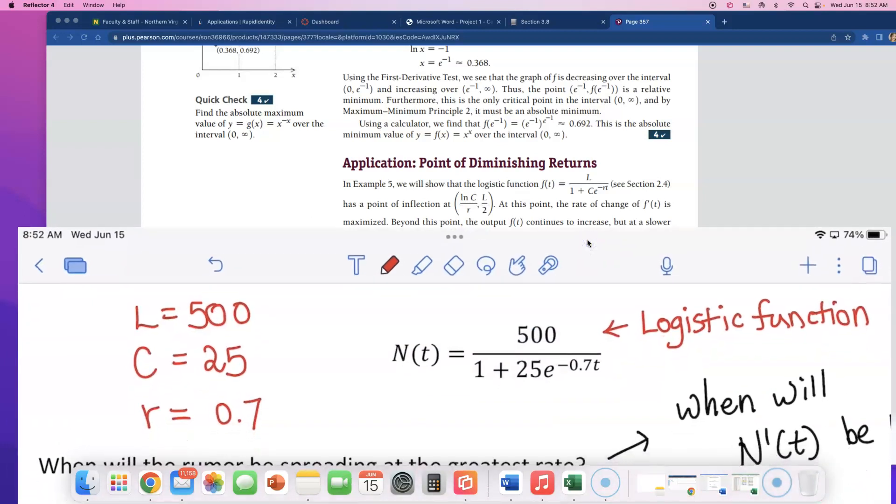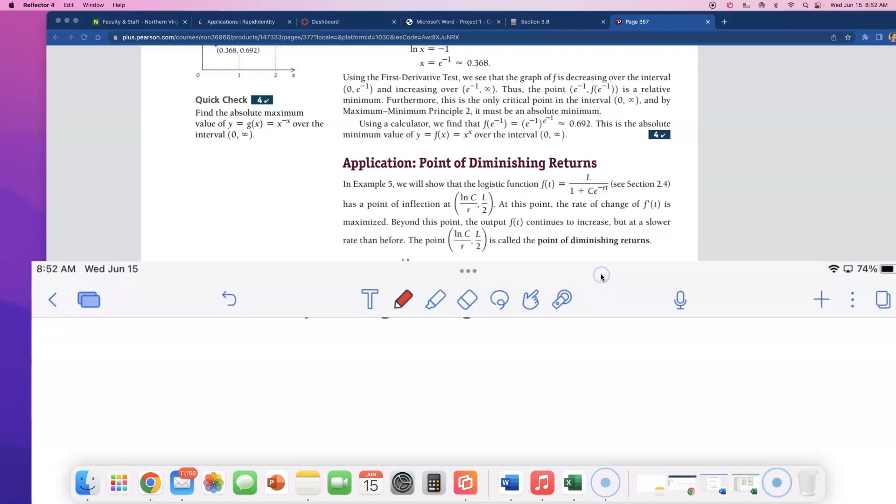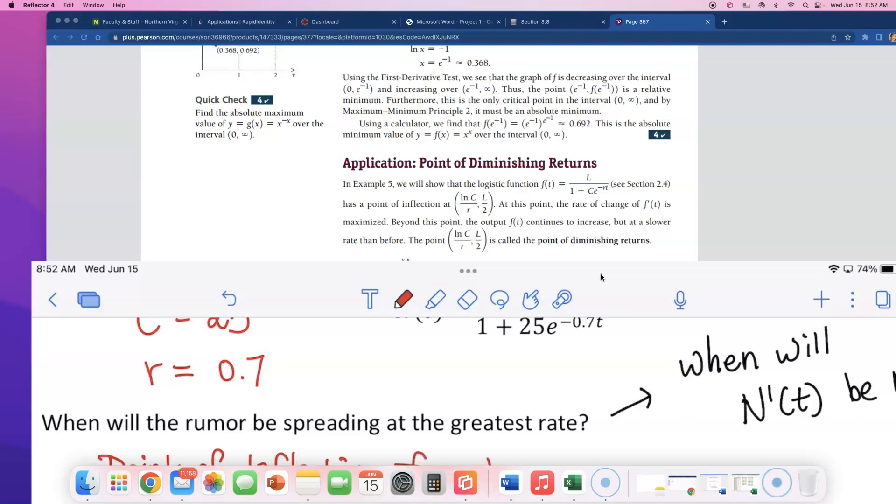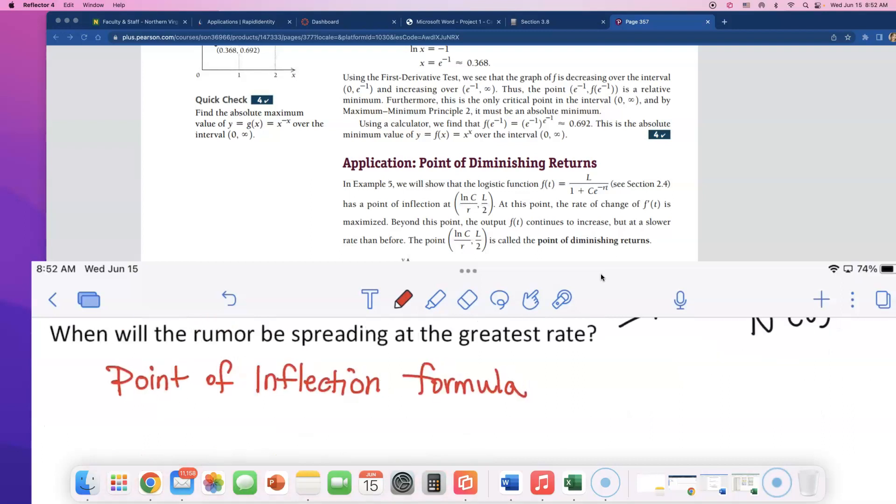So I'm going to go ahead and write this formula down. Using the point of diminishing return, point of inflection formula, we just really need this t value. I'll write the whole thing. It's natural log of c divided by r for the x value or the t value, and L divided by 2 for the y coordinate or the function value. So I wrote down what I really need and that's really all I need to use.